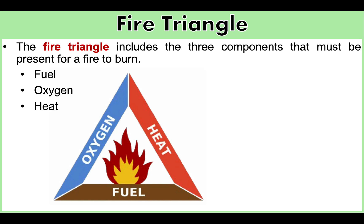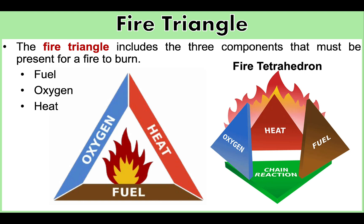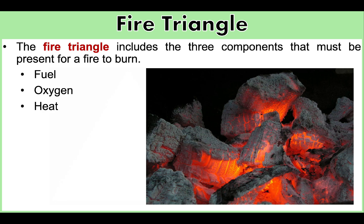For a fire to ignite, there must be an initial and continued heat source. This is called a chain reaction and is part of what makes up the fire tetrahedron — in the middle, as you can see, that's the chain reaction. Heat allows fire to spread by removing moisture from nearby fuel, warming surrounding air, and preheating the fuel in its path. When the fire becomes either fuel controlled — meaning there is no more fuel to burn — or ventilation controlled — meaning there is not enough oxygen to sustain combustion — the fire decays to a smoldering state.